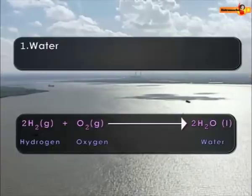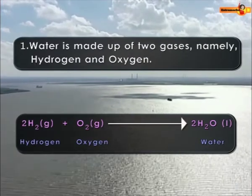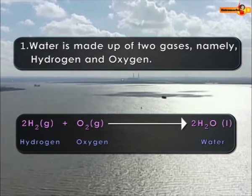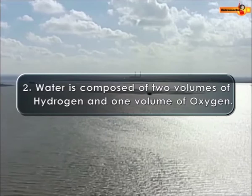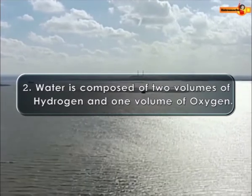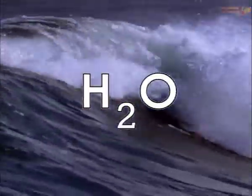So from the electrolysis of water, we conclude that water is made up of two gases: hydrogen and oxygen. Also, the amount of hydrogen is twice the amount of oxygen. This is the reason why the chemical formula of water is H2O.